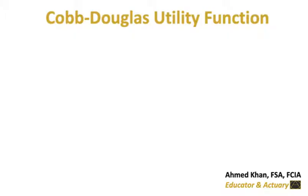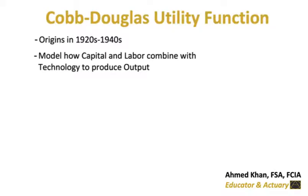The function originates in the 1920s and 1940s by Mr. Cobb and Mr. Douglas, who were trying to model how capital and labor combine with technology to produce output. But this function can also be used to model consumer preferences.